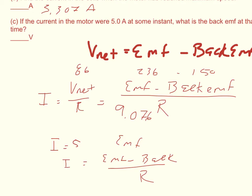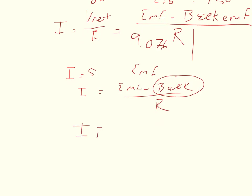And so if I multiply, if I just solve for back EMF, I would get that I times R minus EMF equals back EMF. And it tells me that my current at some time is 5. I know my resistance is 26, I know my maximum EMF is 236. And so I can solve for the back EMF at that time. I get 106 volts of back EMF for my answer.